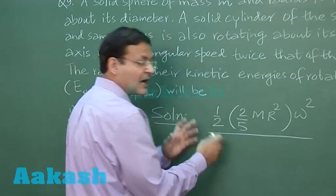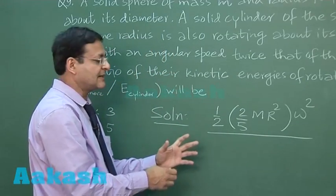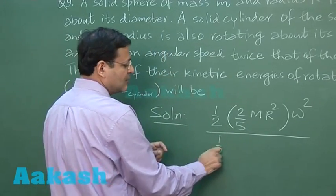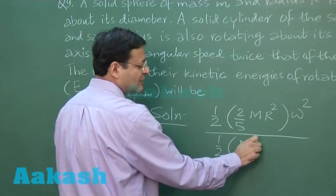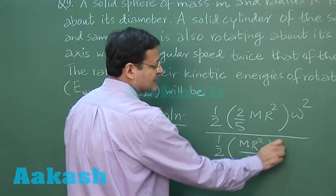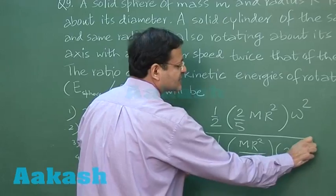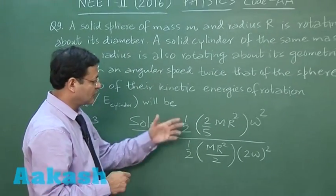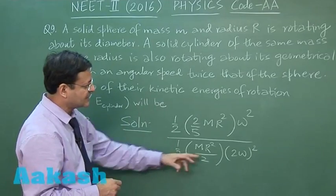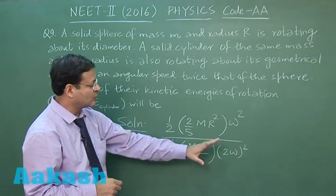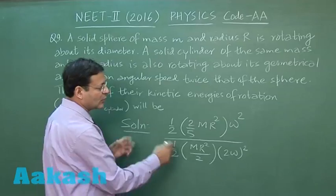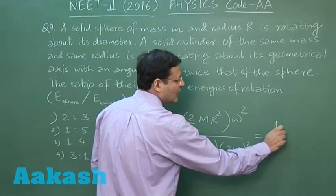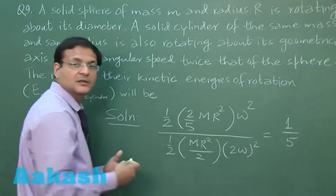And same thing, half I omega square you have to write down for cylinder. So half moment of inertia I am writing mr square by 2 for cylinder, and this rotational speed they are saying twice of the rotational speed of the sphere. So you can see here half half is cancelled, this becomes 4, 4 divided by 2 is 2, 2 will be cancelled, and ultimately it will be ratio 1 is to 5.